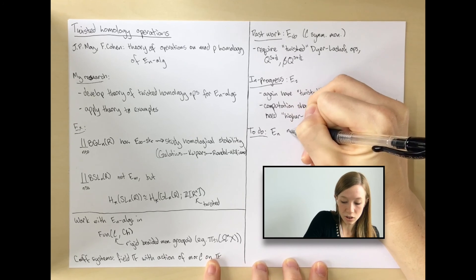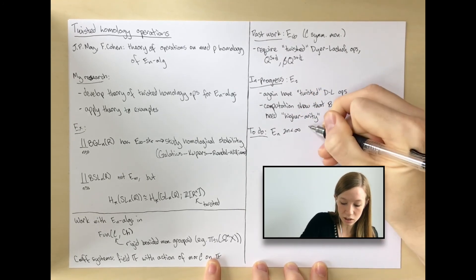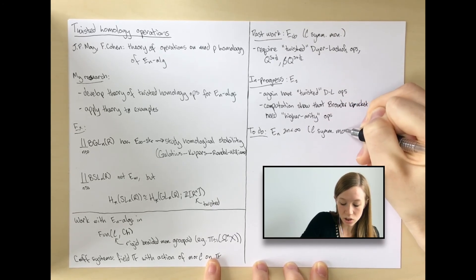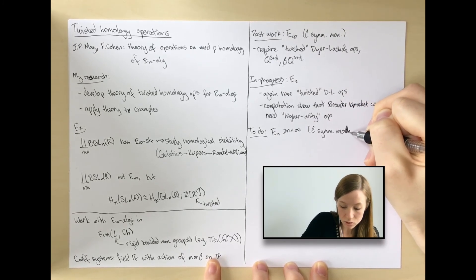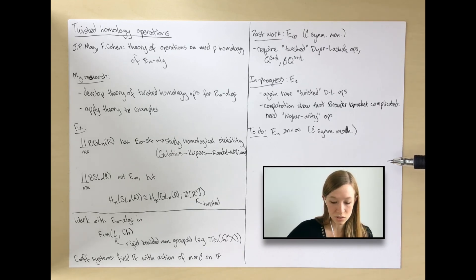I'll end by just saying a couple of words about the very last case, which is E_n for n between 2 and infinity. Again, here you need C to be symmetric monoidal. I don't think there should be anything novel. You should have these twisted Dyer-Lashof operations again. The Browder bracket in the symmetric monoidal case is actually very similar to the classical Browder bracket, so I don't think that should have any surprises.